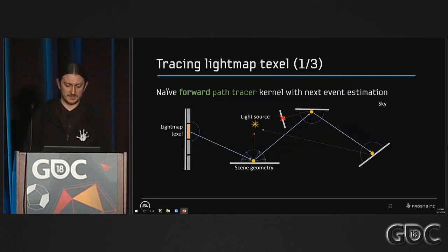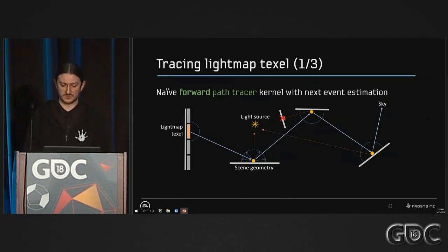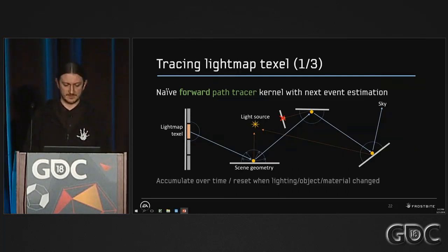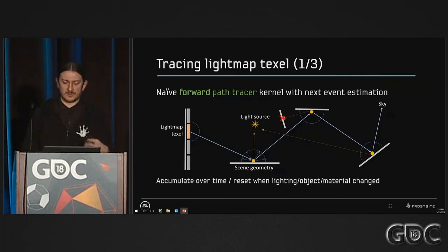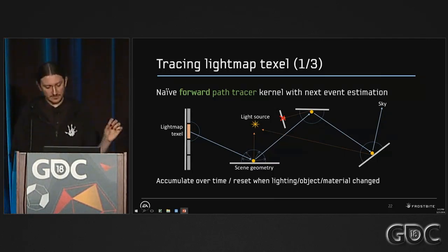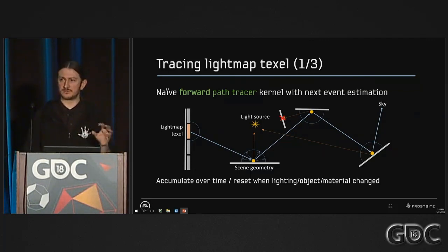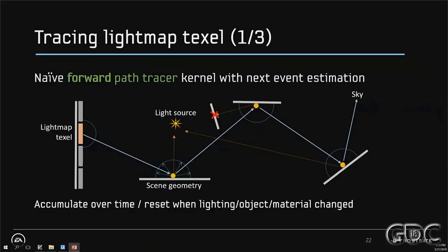If in the end we don't intersect anything, we can sample the sky environment map, for instance. We accumulate over time all those samples using Monte Carlo integration. And when an artist moves a mesh, changes a material, or anything changes, we restart and reset the process, because then everything can be invalid.